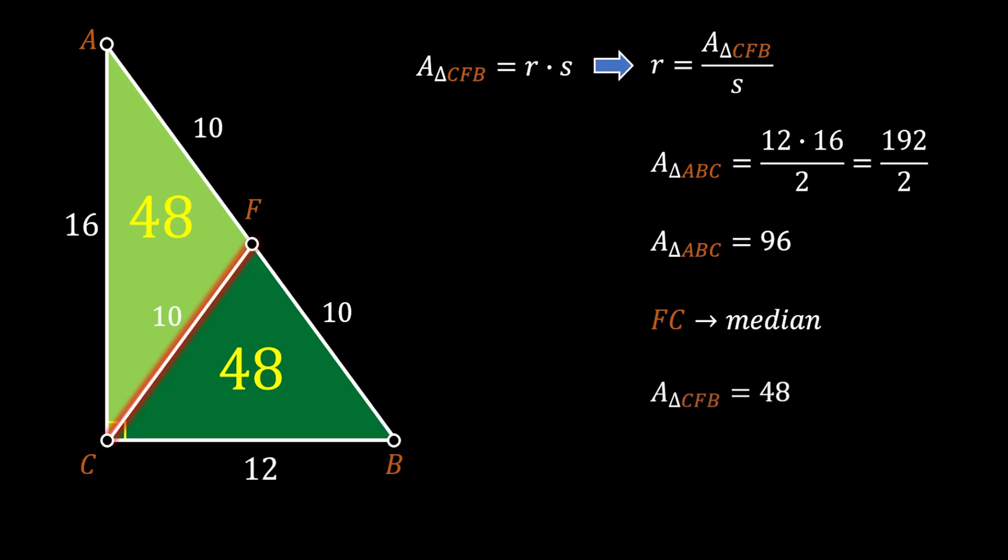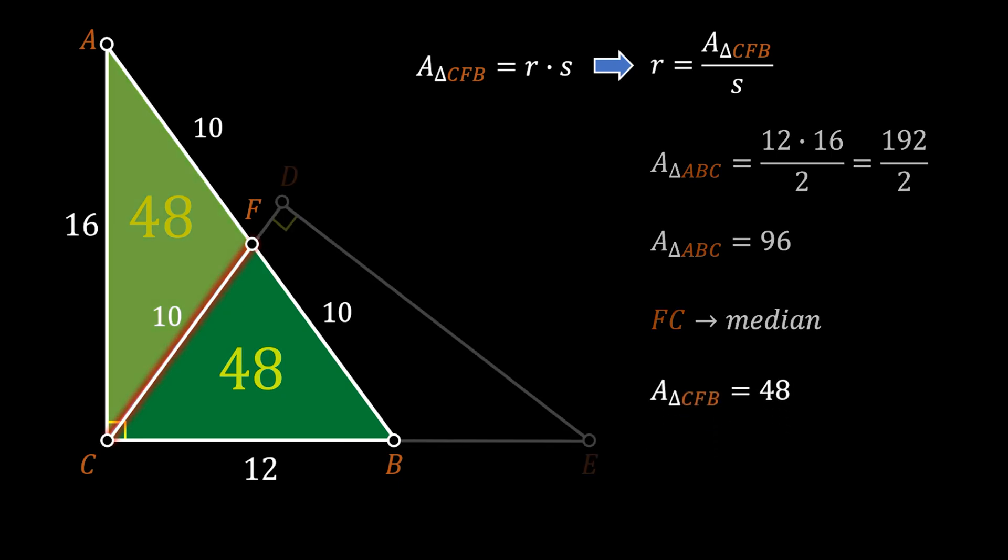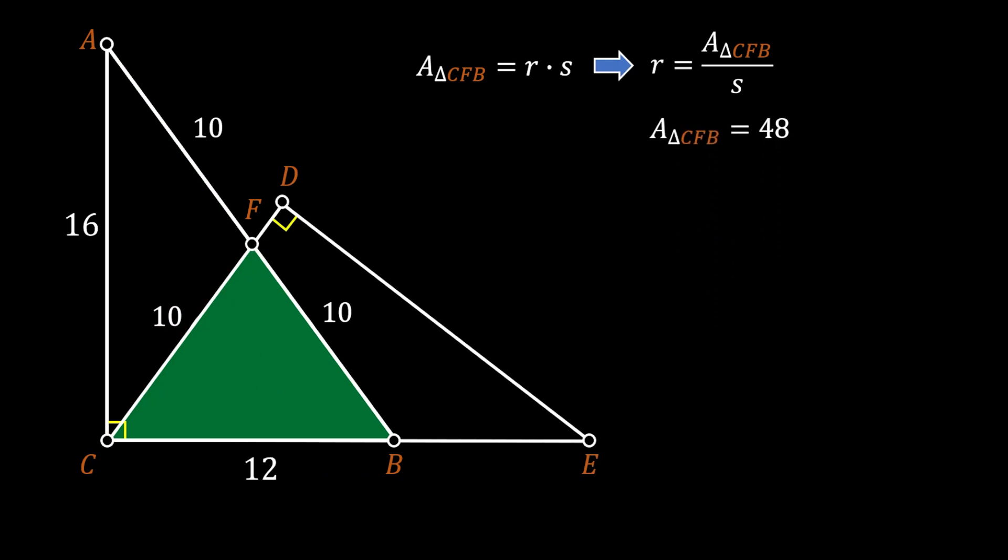Alright, so now we have the area of our triangle CFB. Now, let's find the semiperimeter.